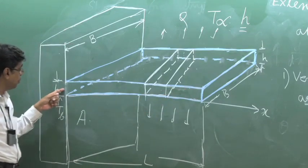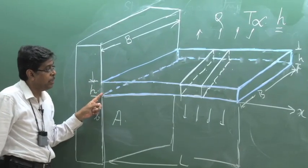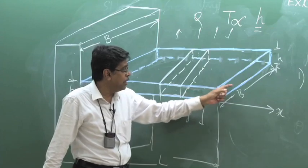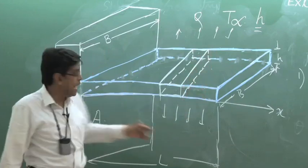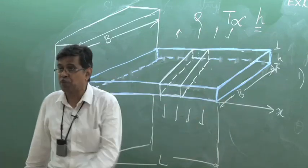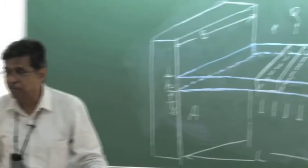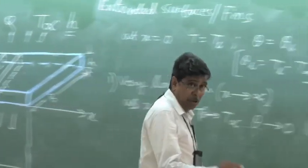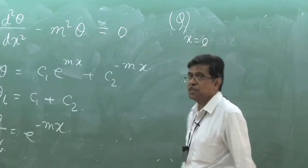The heat extracted from the base by the fin is mostly given to the atmosphere by its lateral surface via convection, and very little is convected from the extreme exposed surface. In a long fin, the entire heat taken from the base is convected by the lateral surface, because when it reaches the extreme end it has almost reached T_infinity, so heat transfer there is zero. We are interested in q at x equal to 0 — how much heat is it extracting from the base?